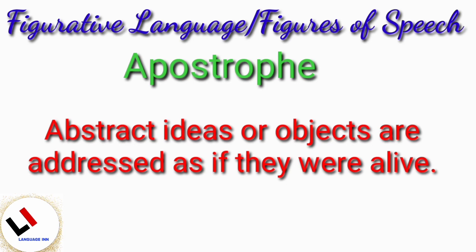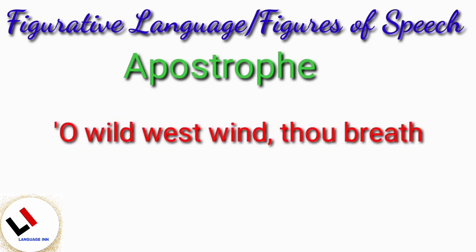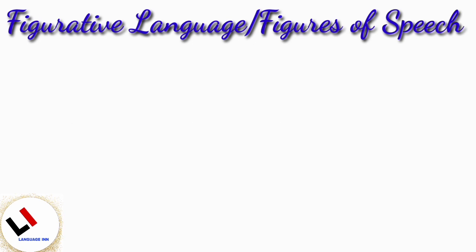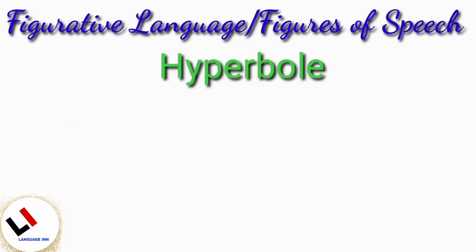Apostrophe. Apostrophe is a figure of speech in which abstract ideas or objects are addressed as if they were alive. For example: O wild west wind, thou breath of autumn's being.